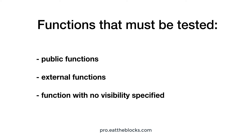This includes functions with the public keyword, the external keyword, and also functions without any visibility specified, because Solidity defaults them to public. This is only for smart contracts written with Solidity before 0.5.0, because from 0.5.0 onwards, Solidity does not allow you to omit the visibility keyword of functions. So as you can see, the rule to choose what needs to be tested in a smart contract is pretty simple.